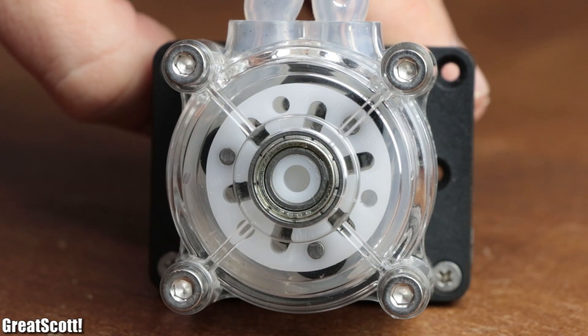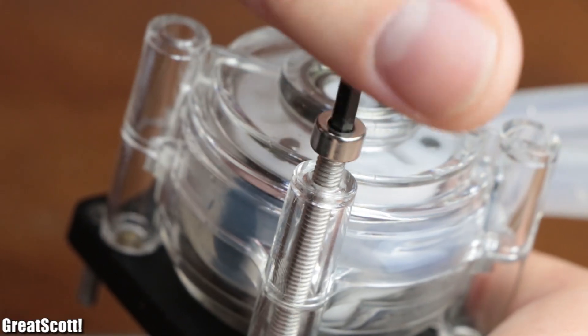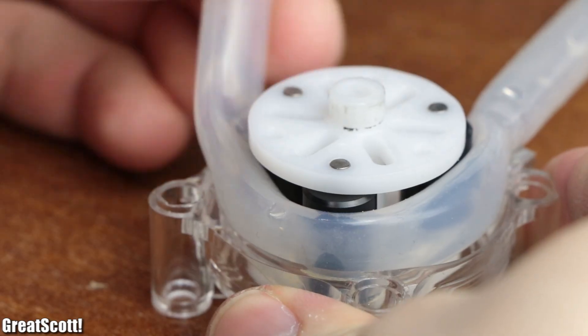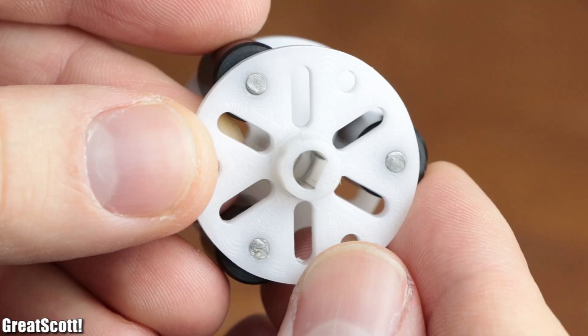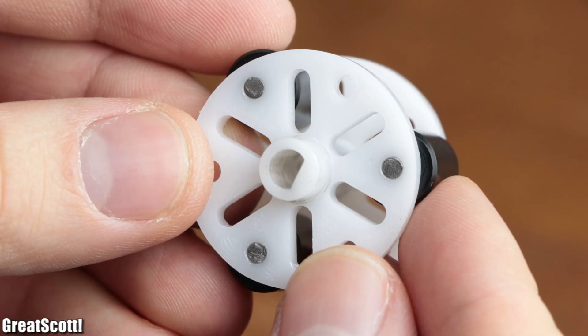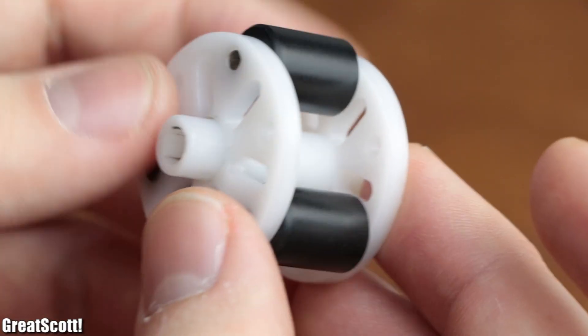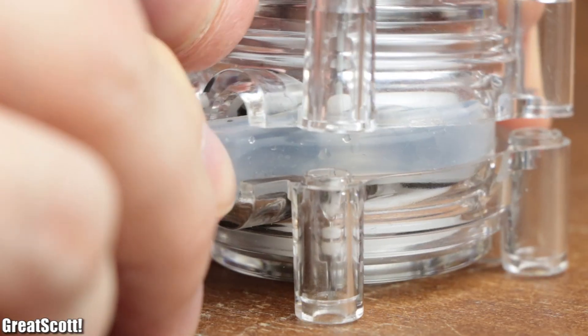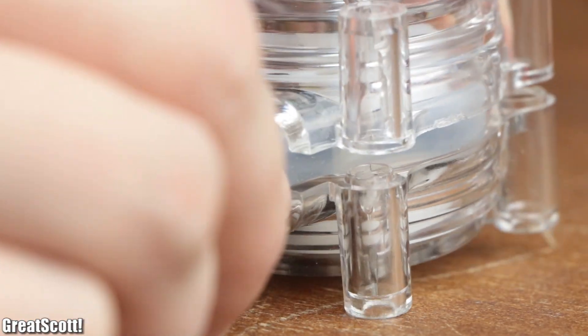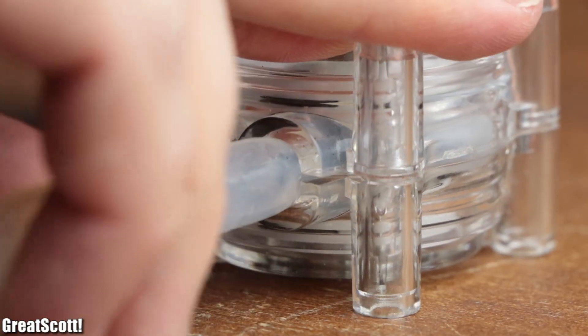If we observe the buy option a bit closer, we can see that it consists of a rotor that is made of two plastic plates between which three plastic rollers are positioned. Additionally we got a plastic outer shell which keeps the silicon tube close to the rollers.